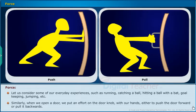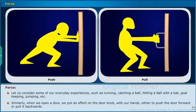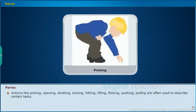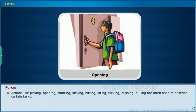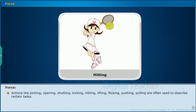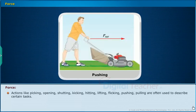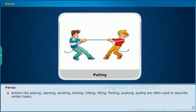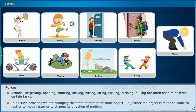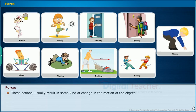When we open a door, we put an effort on the door knob with our hands either to push the door forward or pull it backwards. Actions like picking, opening, shutting, kicking, hitting, lifting, flicking, pushing, and pulling are often used to describe certain tasks. In all such activities, we are changing the state of motion of some object — that is, either the object is made to come to rest, move faster, or change its direction of motion. These actions usually result in some kind of change in the motion of the object.